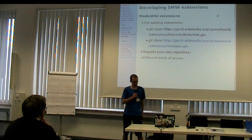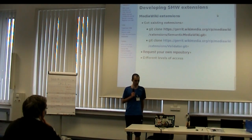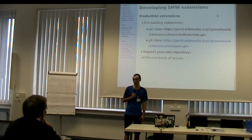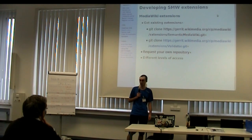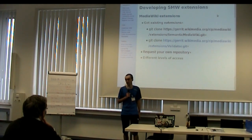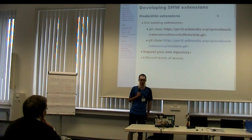Getting a MediaWiki extension is very similar — they are hosted at the same location. Getting Semantic MediaWiki is pretty easy; it's not too big a repository, so you can clone it now if you want. If you just want to have Semantic MediaWiki run, you need MediaWiki itself, Semantic MediaWiki, and Validator, which is a parameter processing library and currently the only other dependency of Semantic MediaWiki.